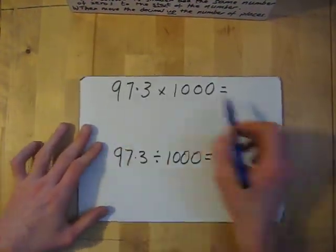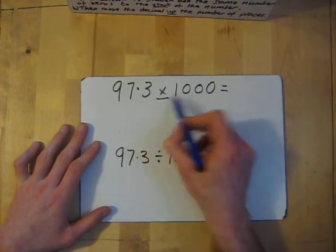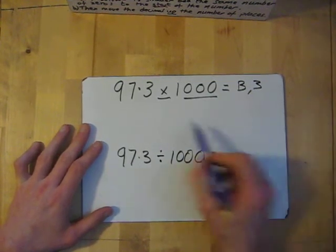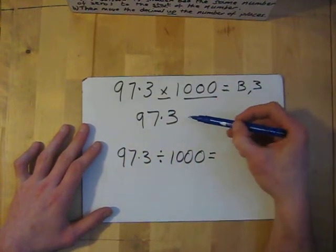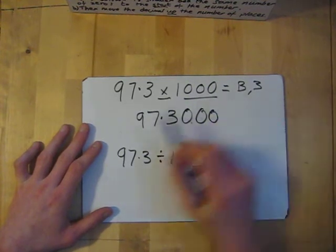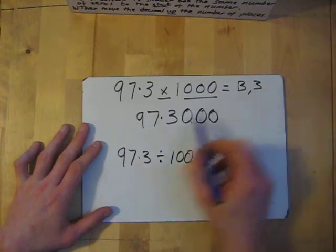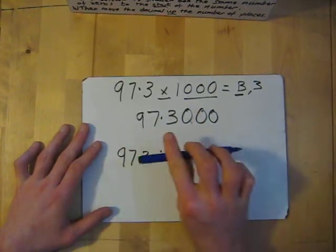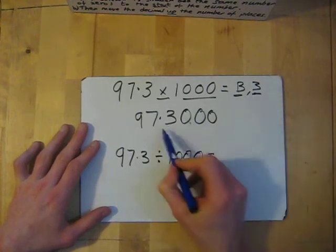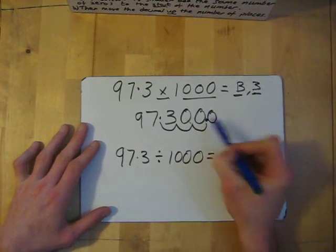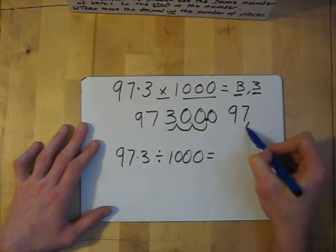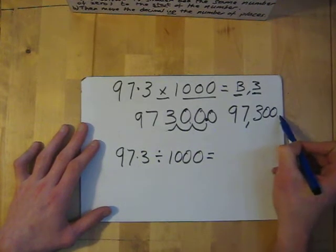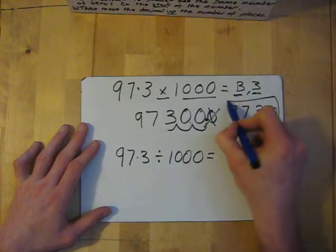Let's do two more — multiplying by a thousand. So 9.73 times a thousand. Bigger or smaller: bigger. How many places: 3. Write my number 9.73, then add the same number of zeros to the end — 1, 2, 3. Might need them, might not, but best to have them. If it's bigger, the decimal point moves down three places: 1, 2, 3. So my decimal point ends up here and my answer is 9,730. There's a point zero at the end but we know that's not worth anything.